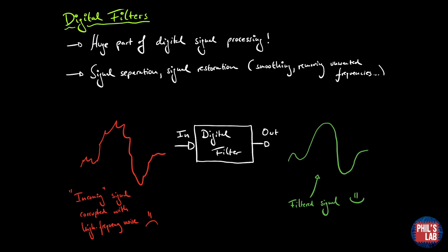Digital filters are a huge part of digital signal processing. Primarily they are used when we need to separate signals, do signal restoration, for example smoothing, removing unwanted frequencies and so on. In essence it's a single input single output system in most cases.